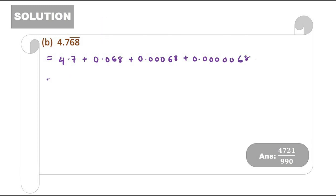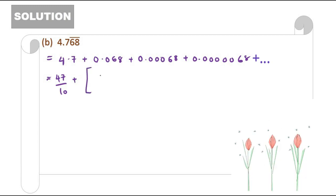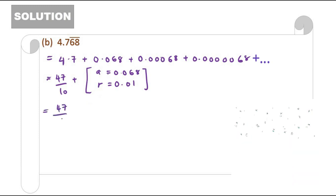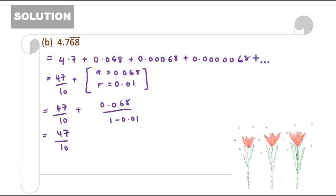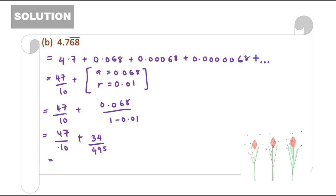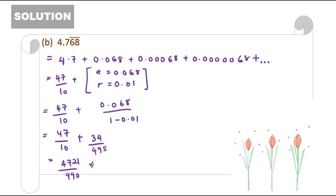For 4.7 it's actually 47 over 10 as we know. And then for this one it follows a summation to infinity, so our A is 0.068 meanwhile our R is 0.01. Finding the summation to infinity, which means 0.068 over 1 minus 0.01, will give you the answer of 34 over 495. Eventually if you plus them together it should be 4711 over 990, so that is the fractional form you are looking for.